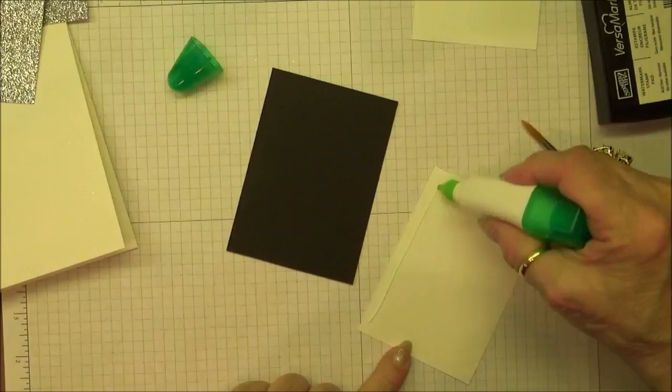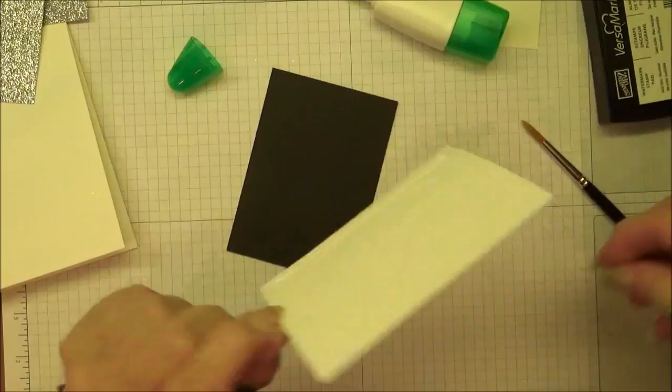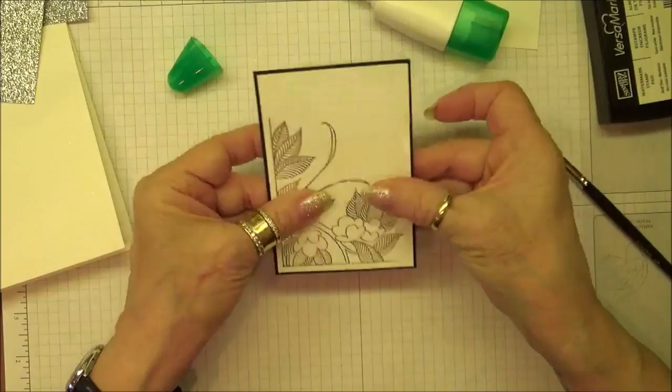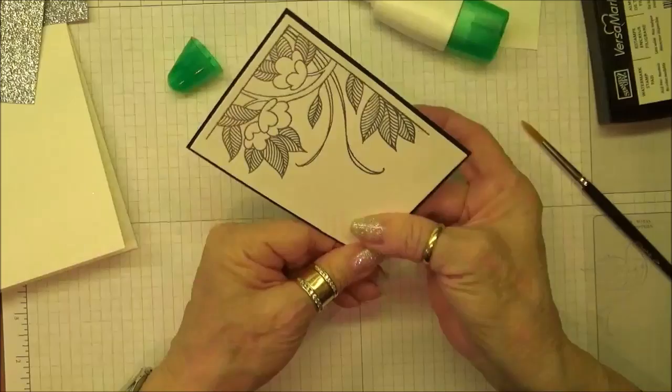Now we're just going to attach this to our black cardstock. I'm using the Tombow glue because it gives me a moment of what I call slip time. It's that little bit of time that you can move your cardstock around.